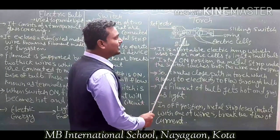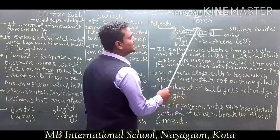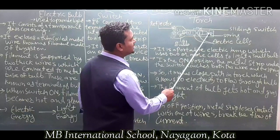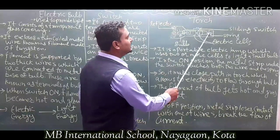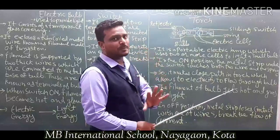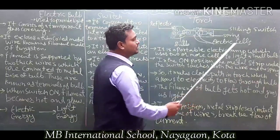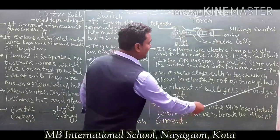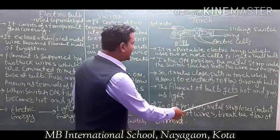In the on position, the metal strip under the switch touches both the wire and the spring. This makes a closed path in the torch, which allows electricity to flow through the bulb. The filament of the bulb gets hot and gives us light.